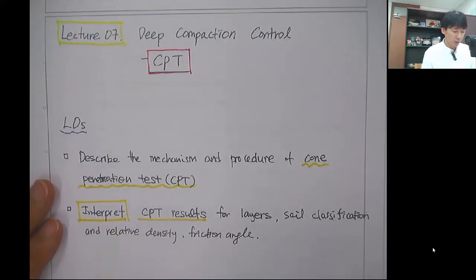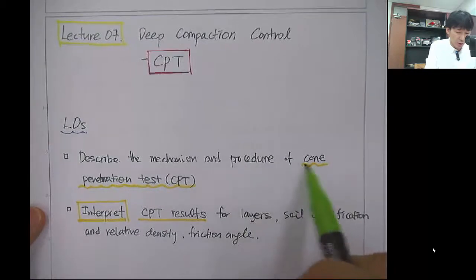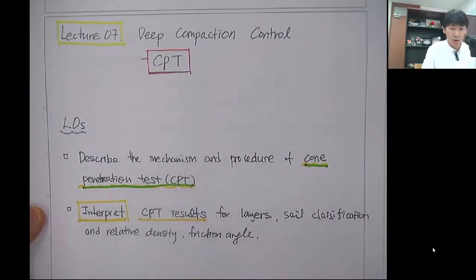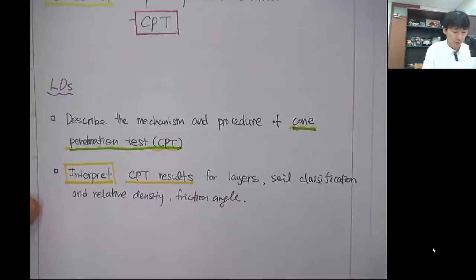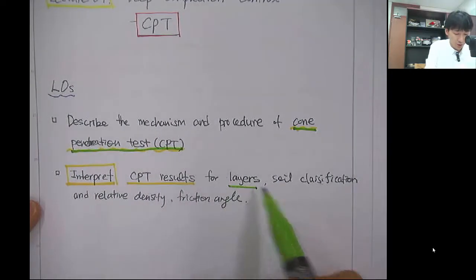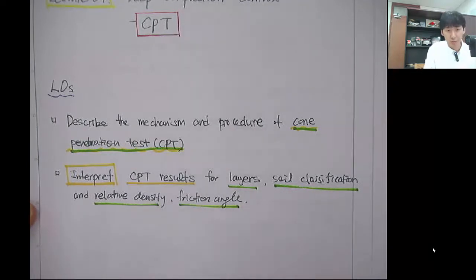The learning objectives of this class are to describe the mechanism and procedure of cone penetration test, and the second is interpretation of CPT results for layer stratification, soil classification, relative density, and friction angle.